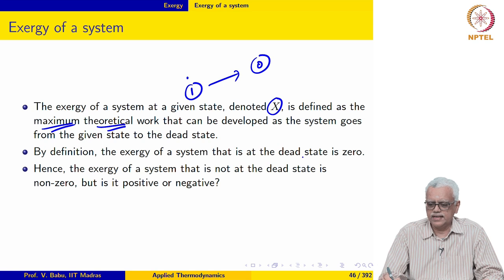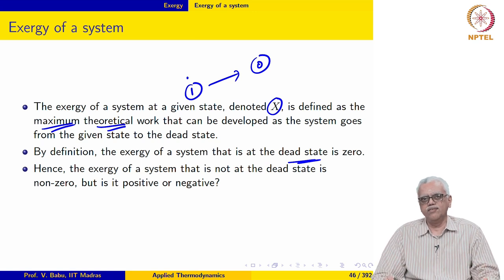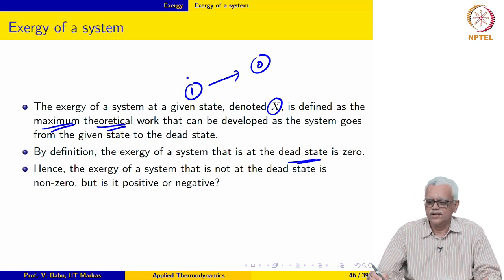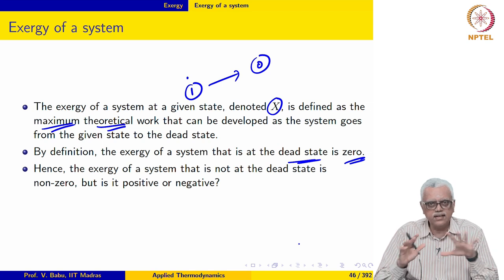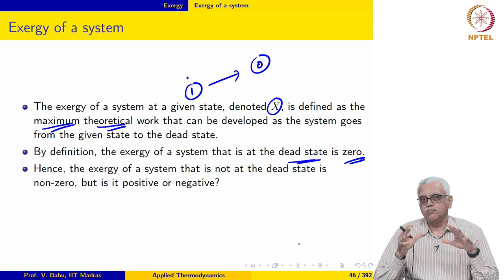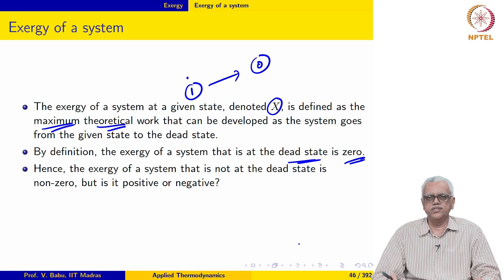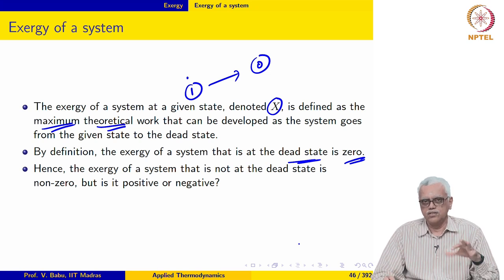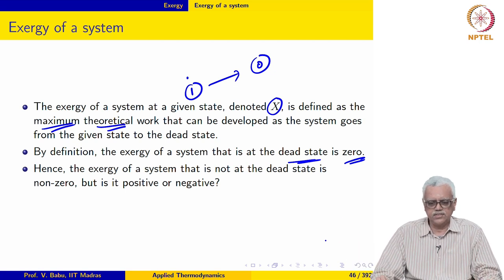The exergy of a system at the dead state is 0. So the exergy of a system that is not at the dead state is non-zero — but is it positive or negative, or can it be both? That is the next question we have to ask.